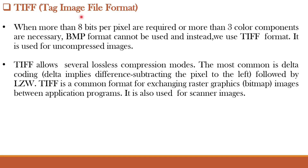Next is TIFF format, or Tag Image File Format. When more than 8 bits per pixel or more than three color components are required, the BMP format cannot be used and instead we use TIFF format. It is used for uncompressed images. TIFF is also used for bi-level or binary images. It allows several lossless compression modes; the most common is delta coding followed by LZW. TIFF is a common format for exchanging raster graphics images between application programs and is also used for scanner images.